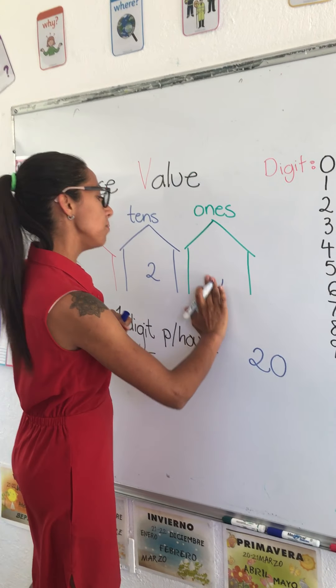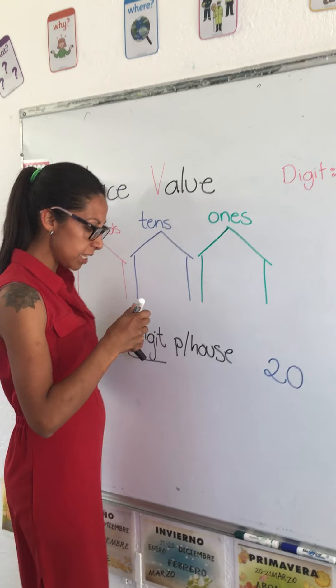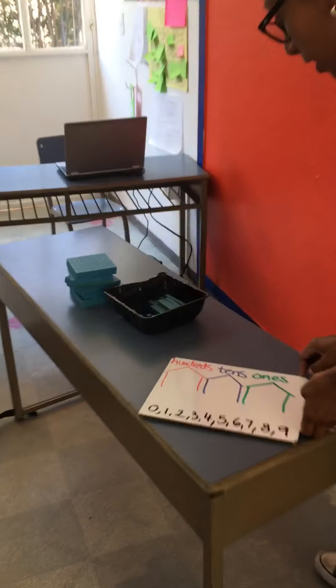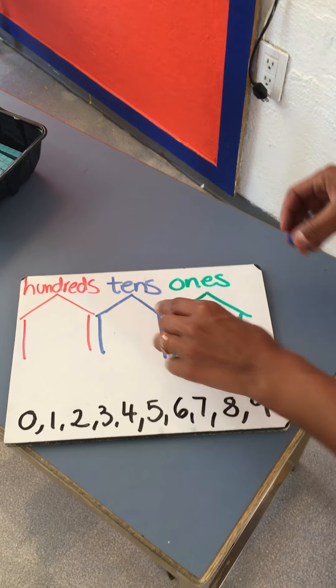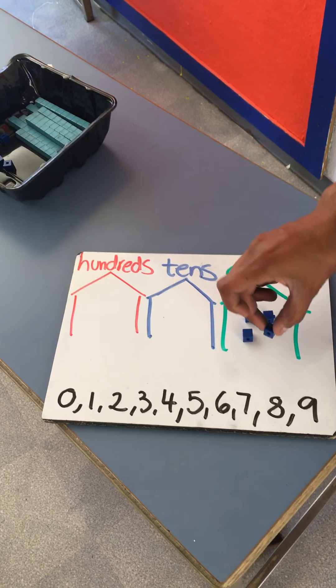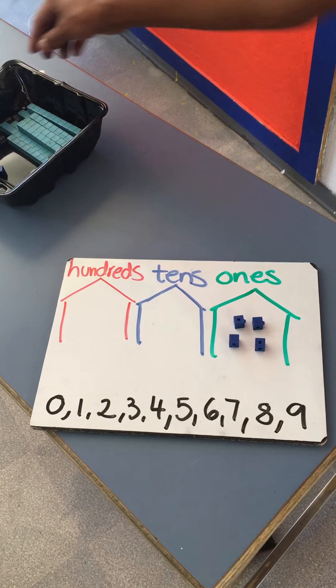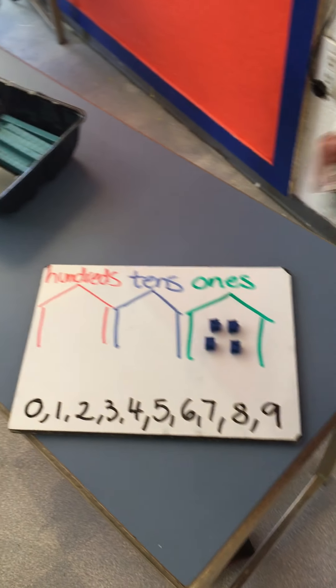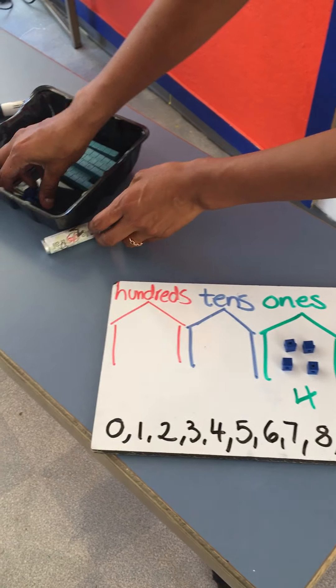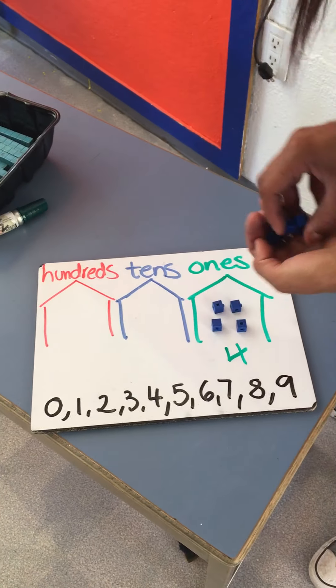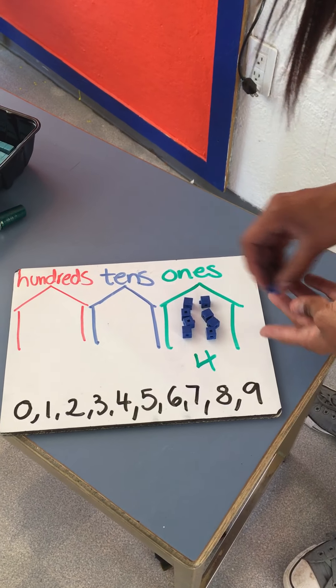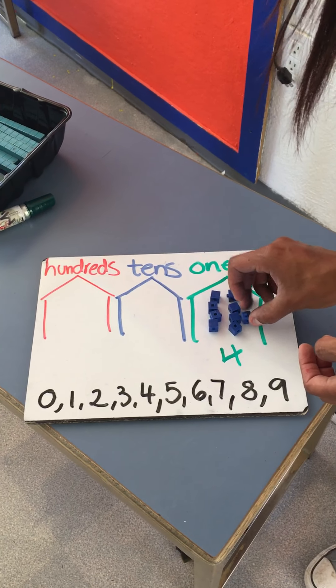How does this work? Maybe when I explain this it will be easier. So here we have one, two, three, and four ones.